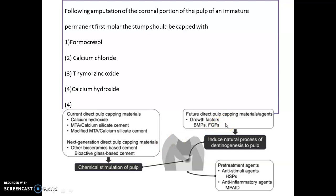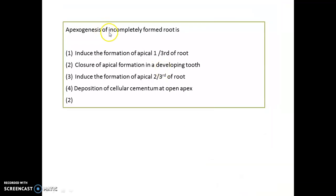Future materials include growth factors such as bone morphogenic growth factors or fibroblastic growth factors, which induce natural dentinogenesis to the pulp. We also have pre-treatment agents like anti-stimuli agents such as heat shock proteins, and anti-inflammatory agents like macromolecular peptide anti-inflammatory drugs. Next question: apexogenesis of an incompletely formed root is what?